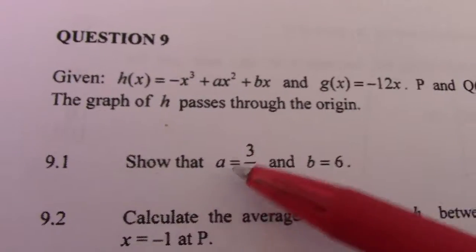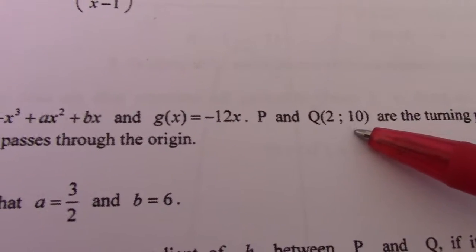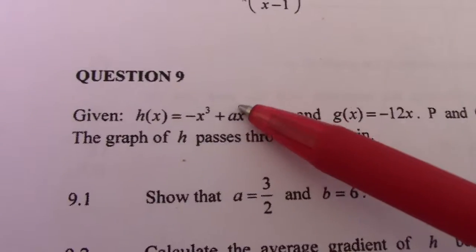Show that a = 3/2 and b = 6. So all that's given to me is Q(2, 10), and I'll use this point to simplify.